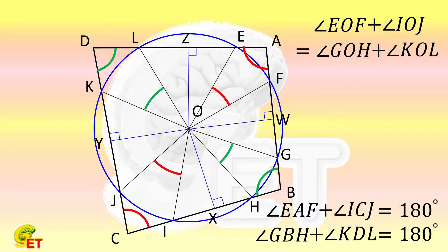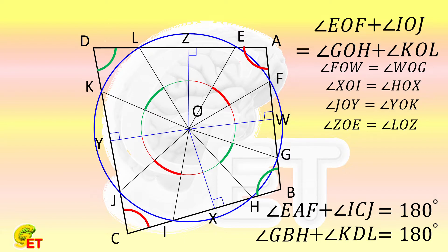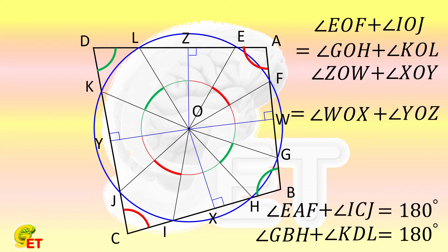First, these lines bisect the central angle subtended by the cord. Combining the known conditions, we get that the summation of the angles ∠ZOW and ∠XOY is equal to the summation of the angles ∠WOX and ∠YOZ.